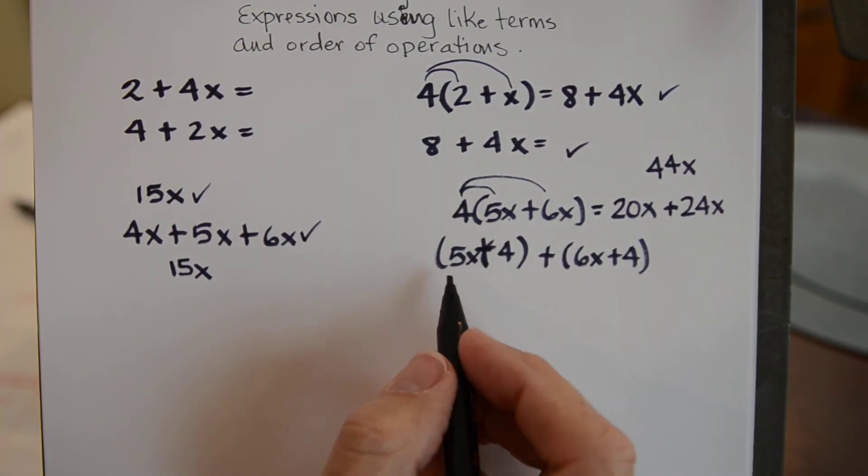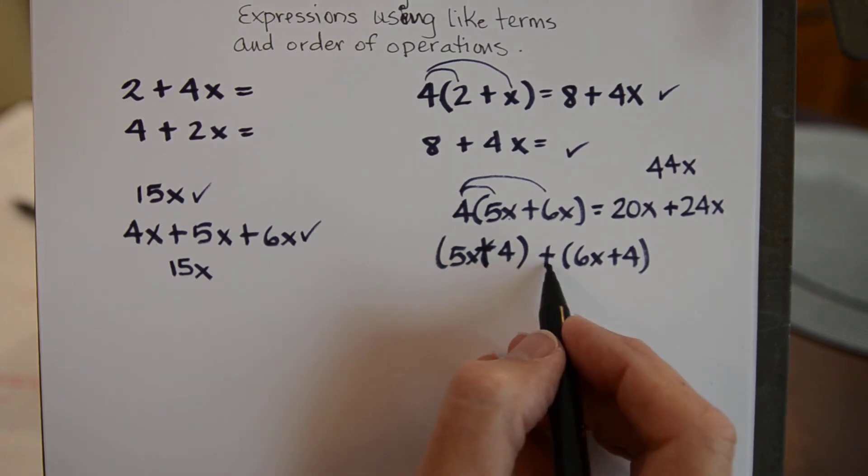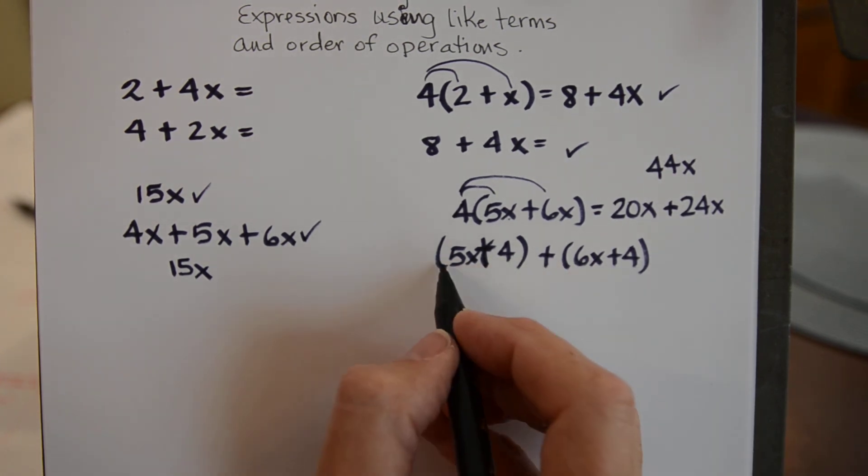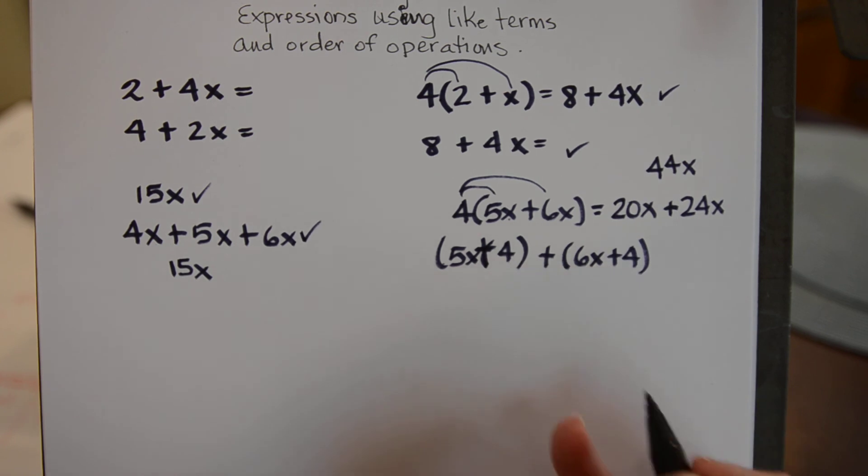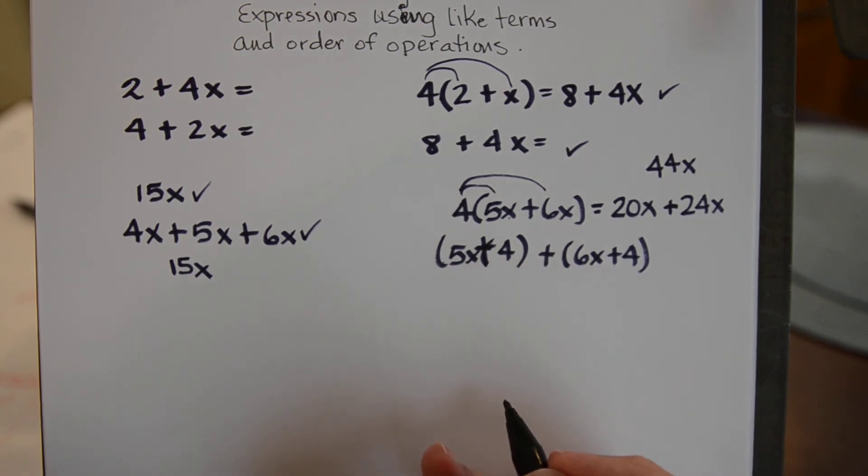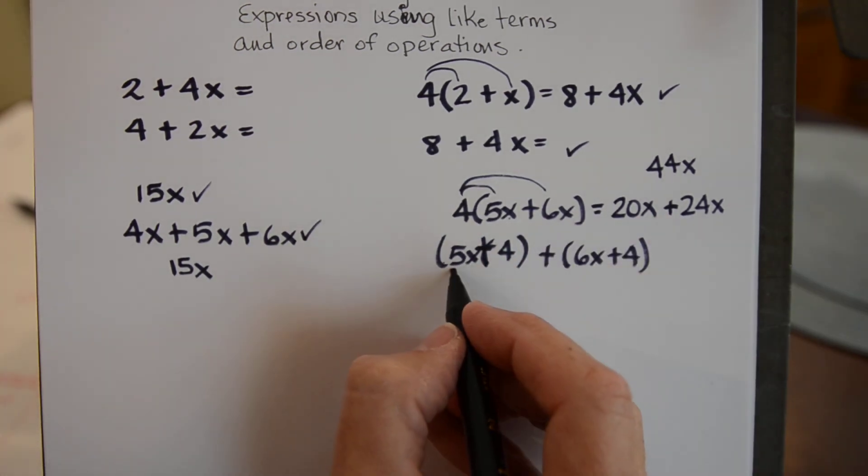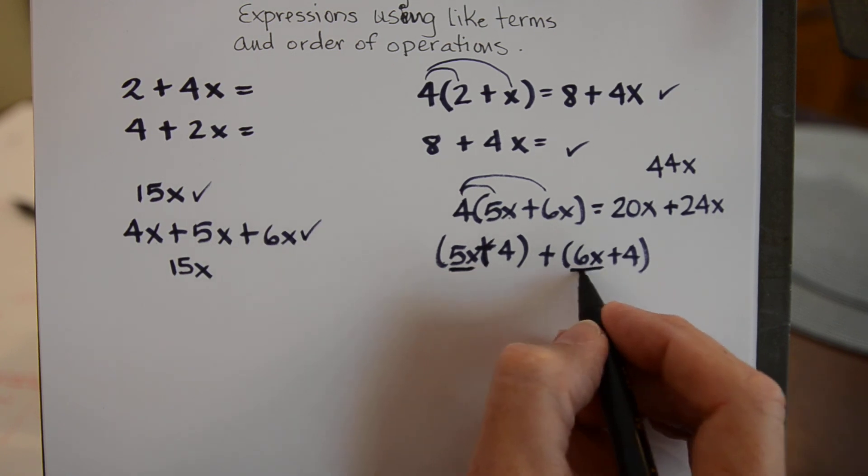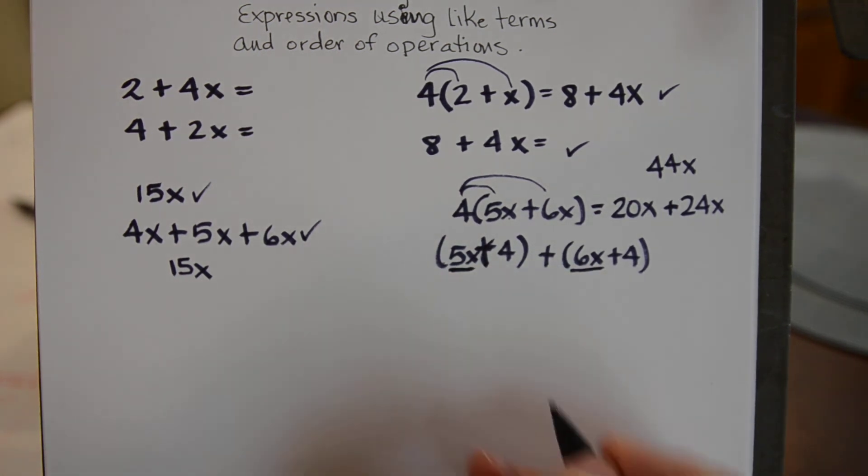So then we'll go down here. Now because this is all combined with addition we can get rid of looking at these parentheses. And then we can see do we have any like terms. And we sure do. This 5x and the 6x are like terms. They can be added together.